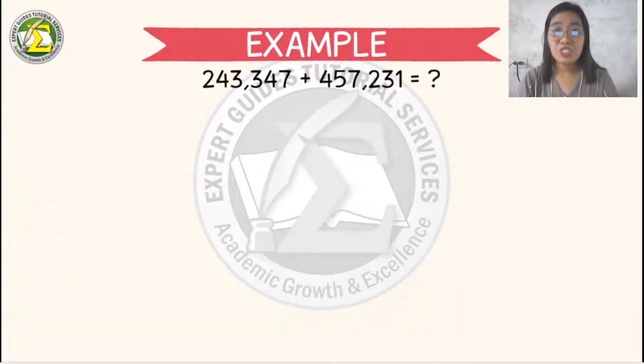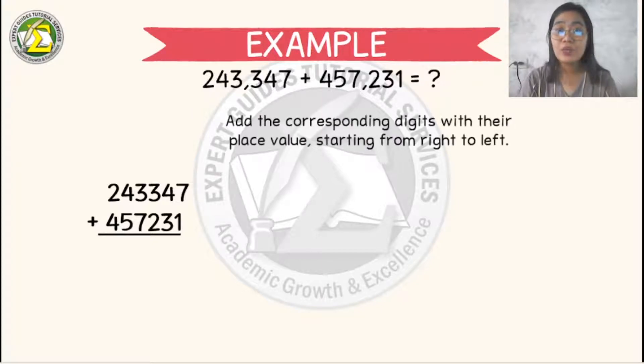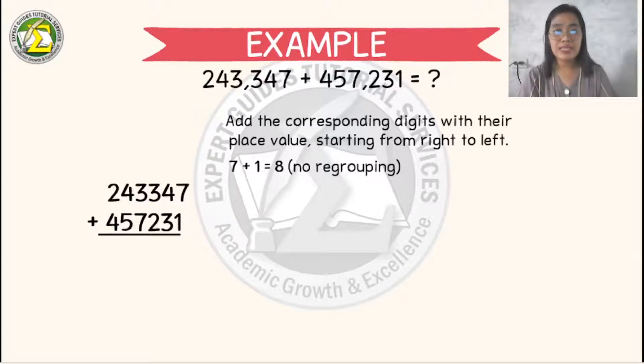So let's try this. For example, we have 243,347 plus 457,233. What will be the answer? So to add using vertical method, we are going to add the corresponding digits with their place values. So 1s to 1s, 10s to 10s, and so on, starting from right to left. So let's add 7 plus 1 is 8, 4 plus 3 is 7. In 100s digit, we have 3 plus 2 equals 5.